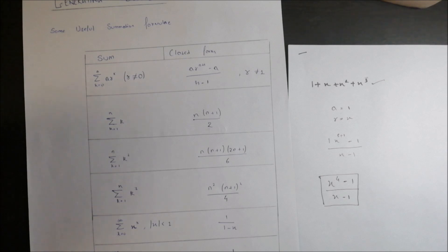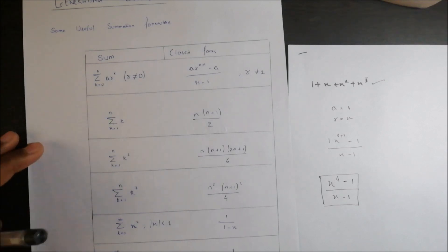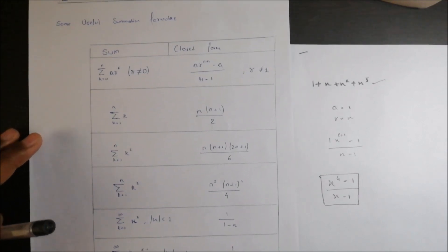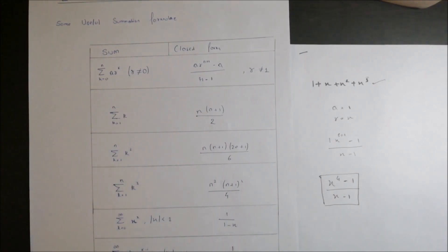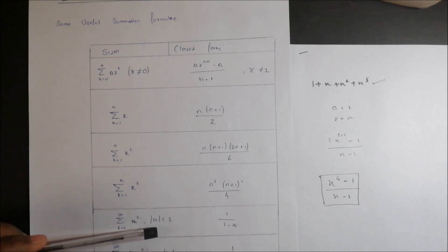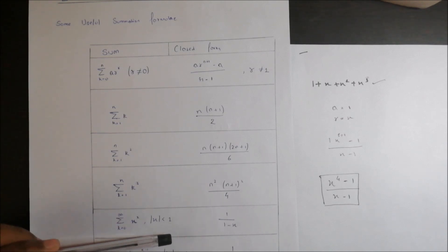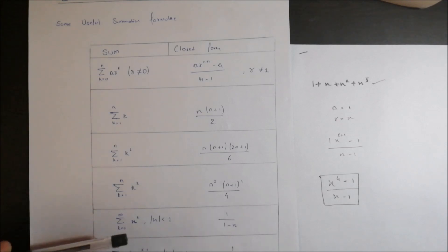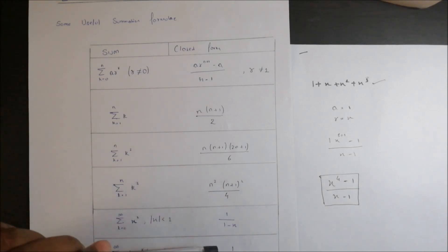The fourth formula is: summation of x^k where the value of x is less than 1. The closed form of this series is 1 upon 1 minus x.